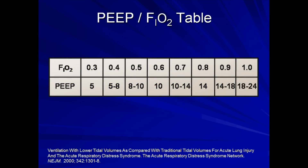In practice, use of a published table is probably the most common method employed. Here is what such a table looks like — this is the specific one taken from the ARDSNET paper. For example, if a patient requires an FiO2 of 60% in order to maintain an oxygenation above an arbitrary target of 92%, the clinician would set the PEEP to 10 cm of water.